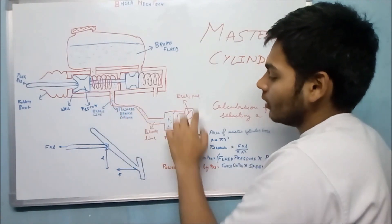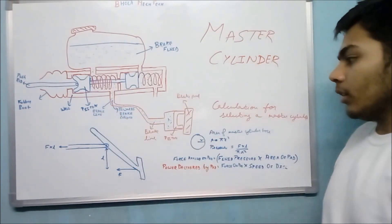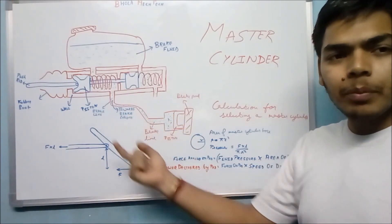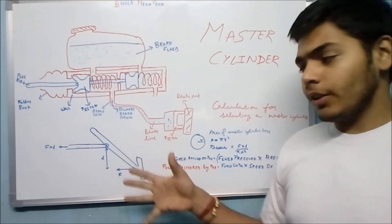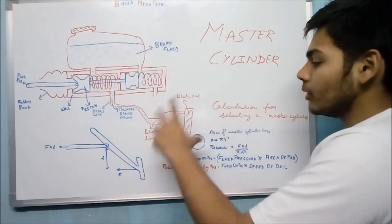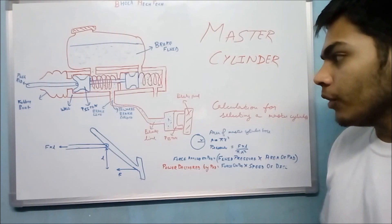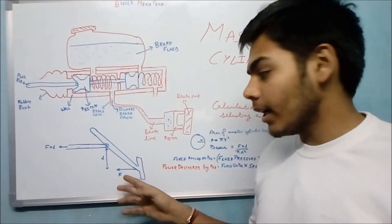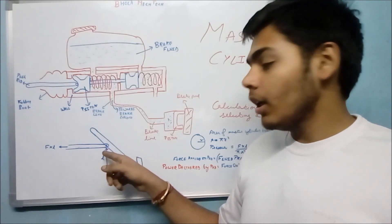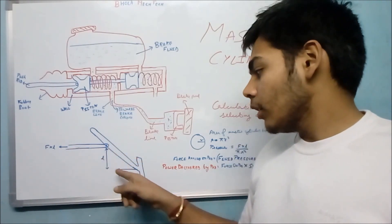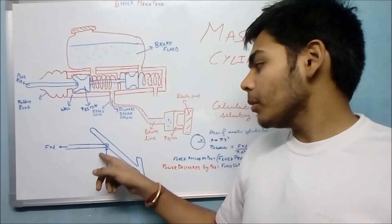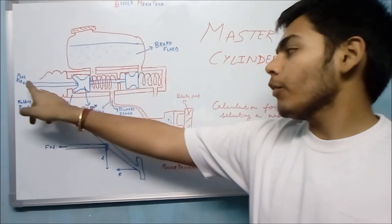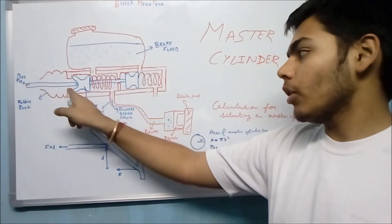These are the brake lines. I will use this diagram to show you how the brake caliper works — the complete braking function will be shown here. When you apply force on the brake pedal, the force multiplied by the perpendicular distance from where the push rod is connected gives the torque, and that will be the force transmitted through this push rod — F into L.